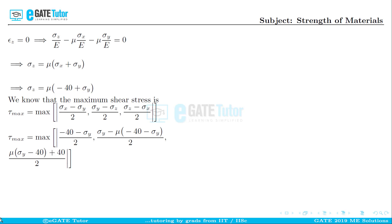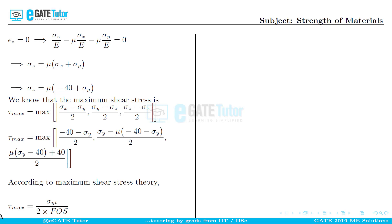According to the Tresca maximum shear stress theory, tau_max = sigma_yt / (2 * factor of safety). Among the three values, the first quantity can be taken as the maximum of the three.